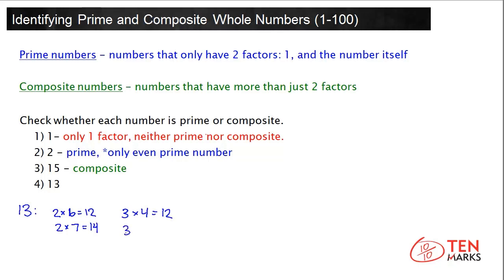3 times 4 equals 12, and 3 times 5 equals 15. 3 can't be multiplied by something to get 13, so 3 is not a factor of 13. Let's try 4: 4 times 3 equals 12, and 4 times 4 equals 16. 4 can't be multiplied by something to get 13, so 4 is not a factor of 13.